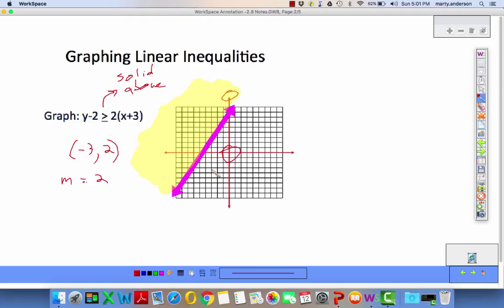Pick a point. Should the origin work? The answer is no. The origin should fail because it's not in the shaded region. In this case, the points on the line are part of the system, the set of all ordered pairs that are a solution. So check the origin: zero minus 2 greater than or equal to 2 times zero plus 3. Is negative 2 greater than or equal to 6? Heck no. Zero, zero doesn't work. So we're not surprised because it's not in the shaded region. These points will work up here because they are in the shaded region.